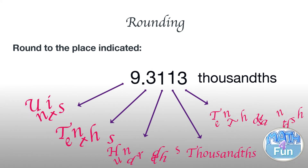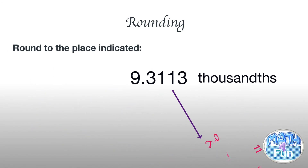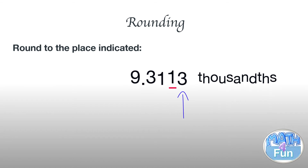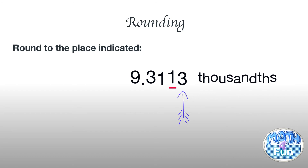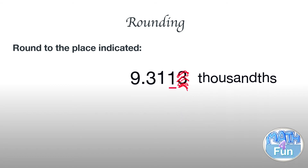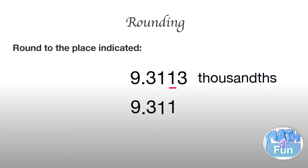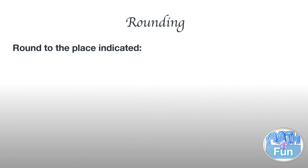They want us to round to the nearest thousandth, which is the underlined digit. We look to the right — we have 3, which is not greater than or equal to 5 — so we remove it, make it zero, and keep 1 as it is. The number becomes 9.3110, and if you don't write the trailing zero it's also fine.